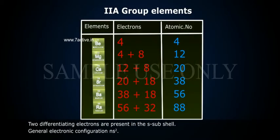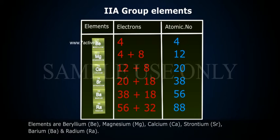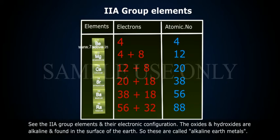Group 2A elements have two differentiating electrons present in the S subshell. General electronic configuration: ns2. Elements are beryllium (Be), magnesium (Mg), calcium (Ca), strontium (Sr), barium (Ba), and radium (Ra). See the Group 2A elements and their electronic configurations. The oxides and hydroxides are alkaline and found on the surface of the earth, so these are called alkaline earth metals.